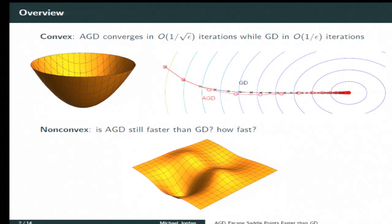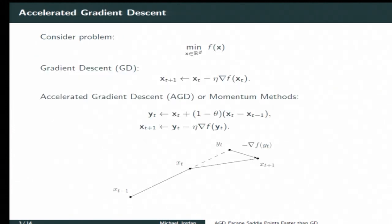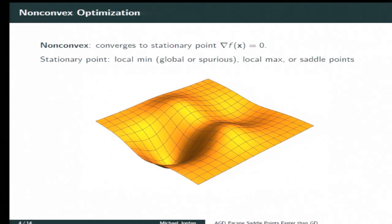And we'd like to transfer that sort of thinking to the non-convex case. Is it still faster than GD? How much faster? And can we do this with really simple algorithms so we don't have to start to use Hessians even though we're trying to work with more complicated geometry? So here is one way of writing Nesterov's accelerated gradient descent. It's as if you're taking the gradient at a look-ahead point and doing gradient descent from there.